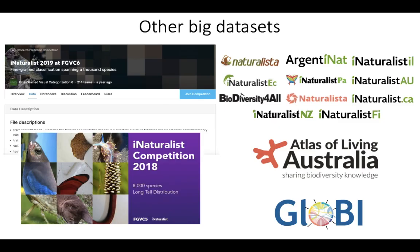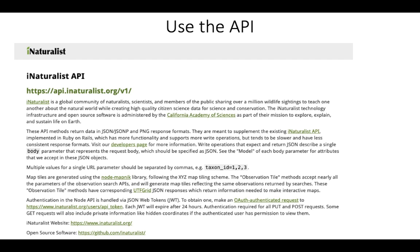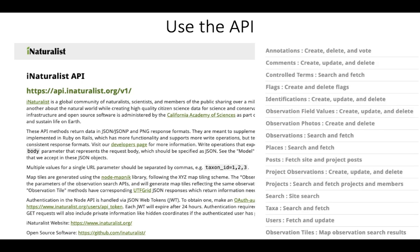Other ways to get iNaturalist data include datasets for computer vision and machine learning research with images — search Kaggle with a K. We have national-level datasets available from organizations that are members of our international iNaturalist network, for example the Atlas of Living Australia. If you're interested in interaction data, search globalbioticinteractions.org. For more specific data needs, you may need to use the iNaturalist API — there's a lot more available there, but please be aware of the bandwidth limits so that we don't have to block you.